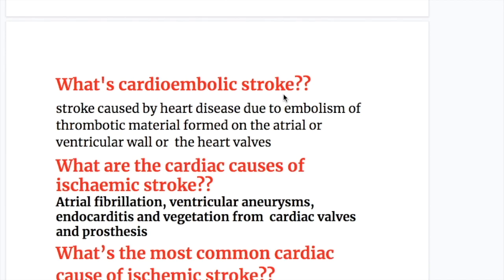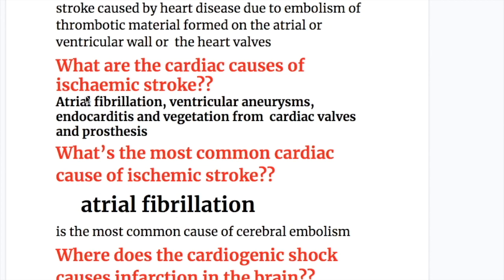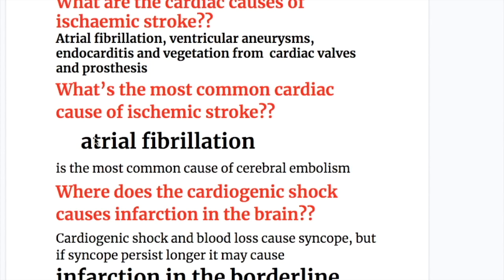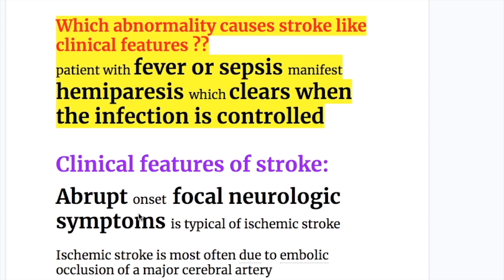Cardioembolic stroke is stroke caused by heart disease due to embolism of thrombotic material formed on the atrial or ventricular wall or heart valves. Cardiac causes include atrial fibrillation, ventricular aneurysms, endocarditis, and vegetation from cardiac valves and prostheses. Atrial fibrillation is the most common cause of cerebral embolism. Patients with fever or sepsis may manifest hemiparesis, which clears when the infection is controlled.